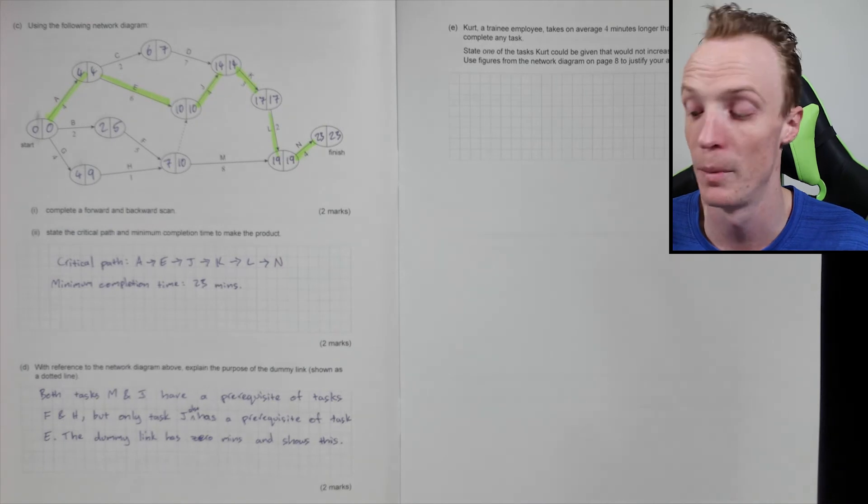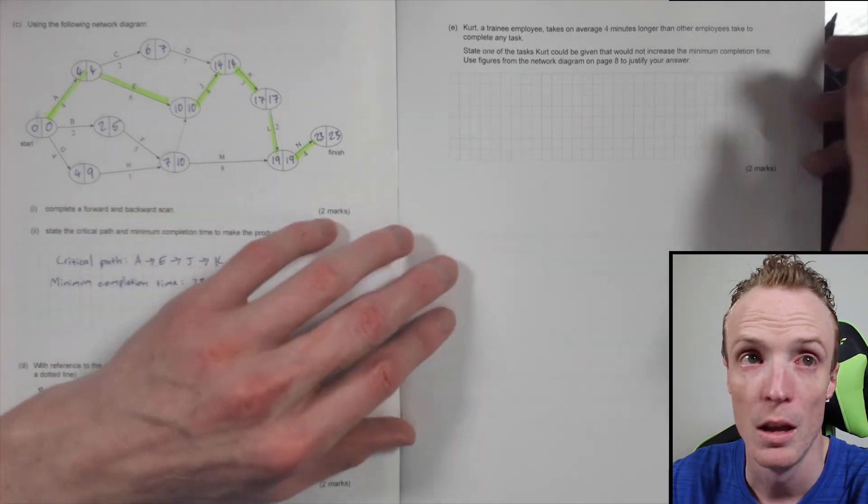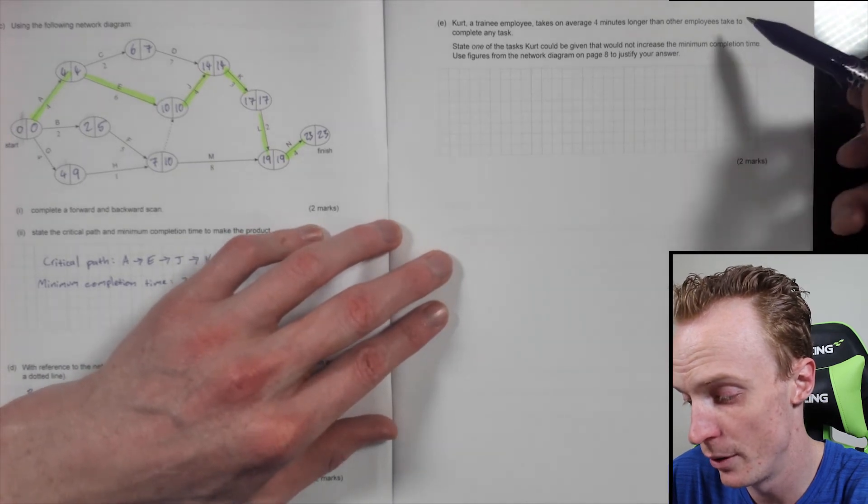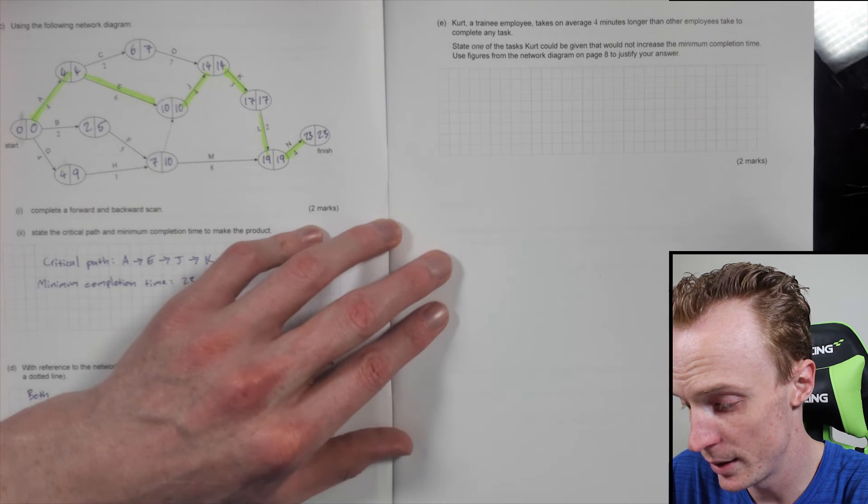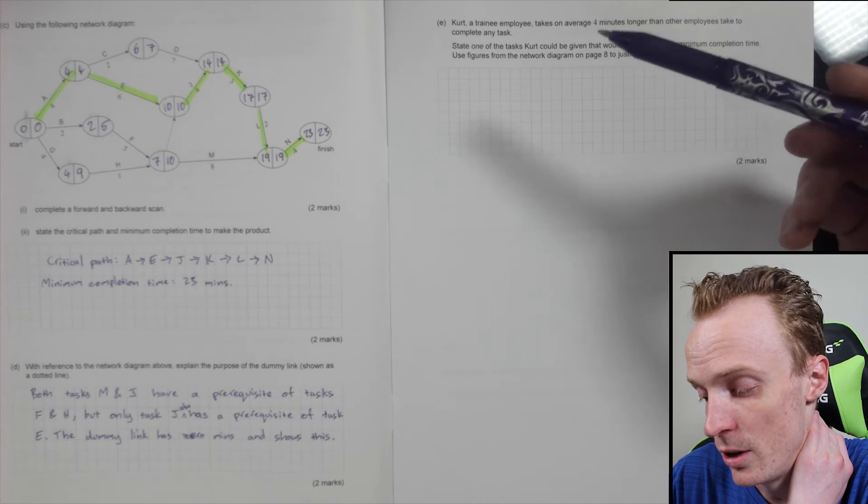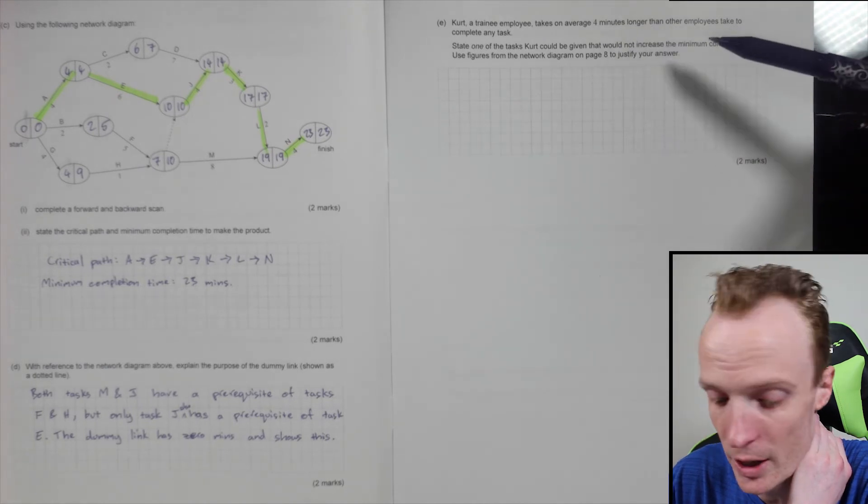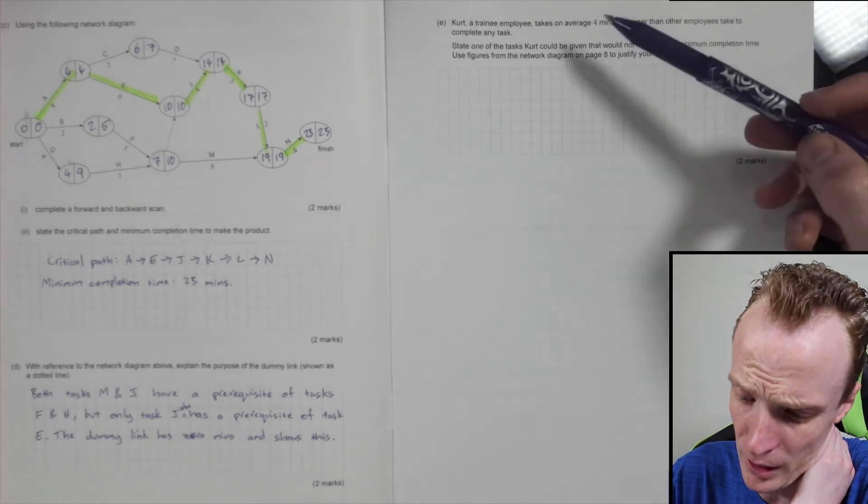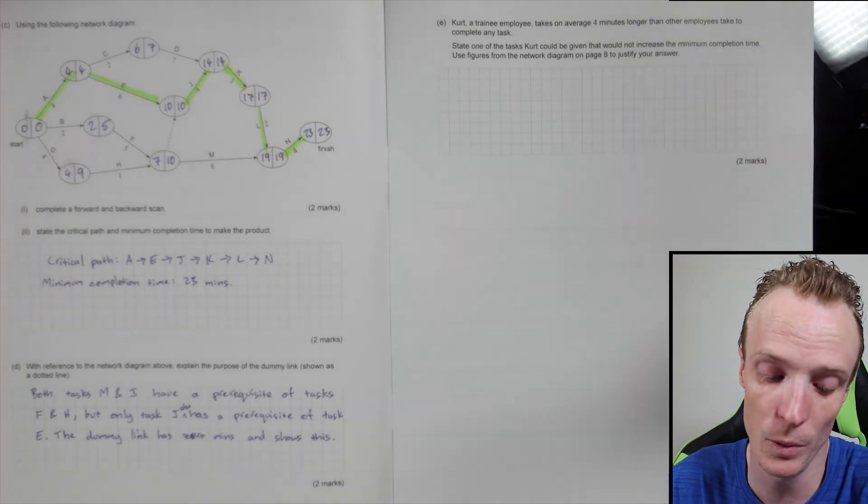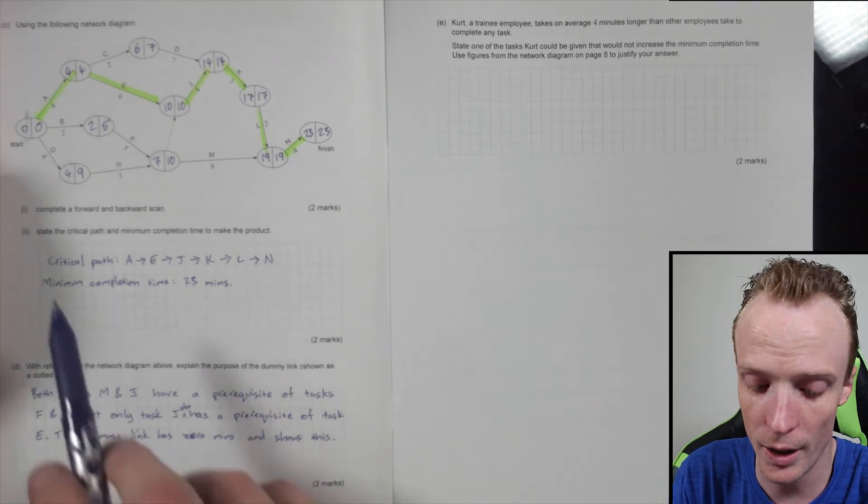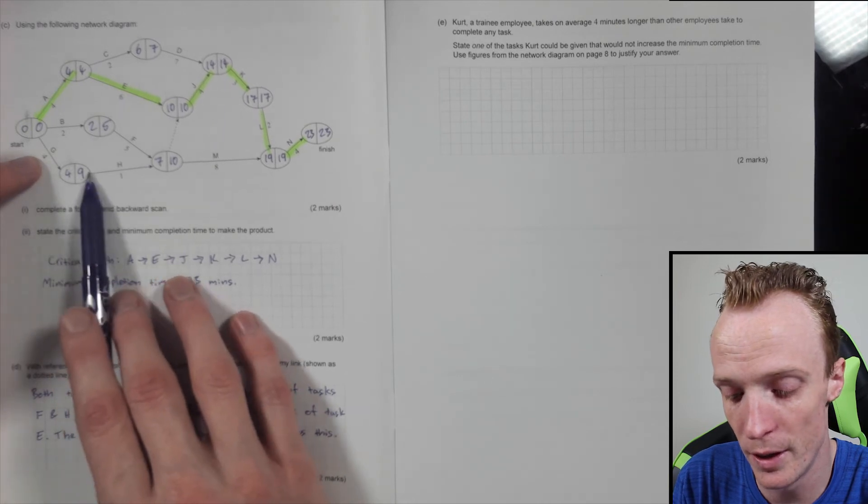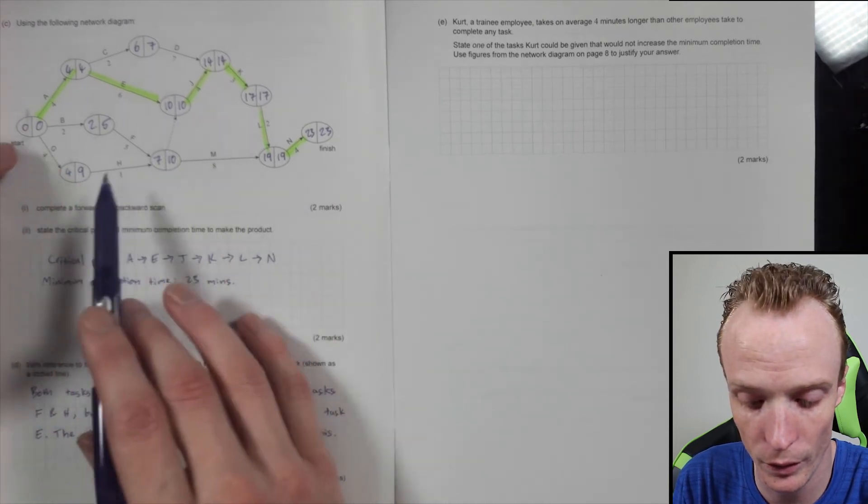Alright, now Kurt, a trainee employee, takes on average four minutes longer than other employees to complete any task. State one of the tasks Kurt could be given that would not increase the minimum completion time. Use figures from the network diagram on page eight to justify your answer. So really what we're looking for here is somewhere that has a slack time of four minutes. That's really what we're looking for, anywhere that you can find that. We've got it. I can see the easiest one's probably here. You can see that we could delay this by five minutes and there'll be no increase to this.